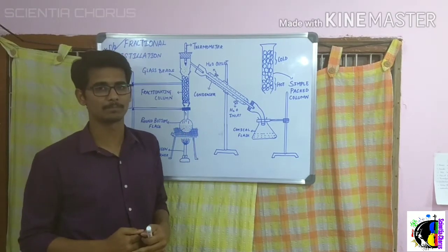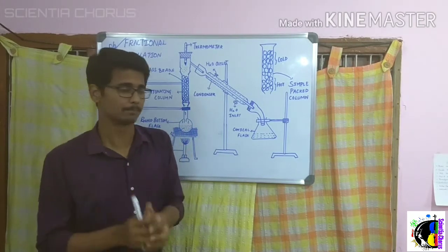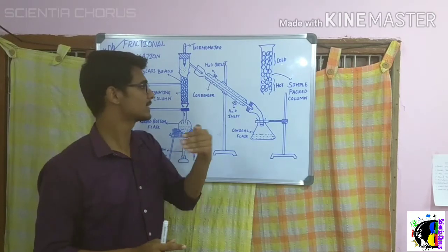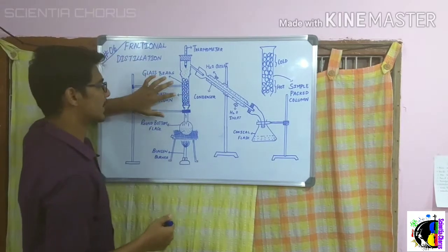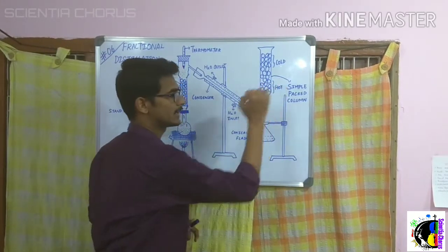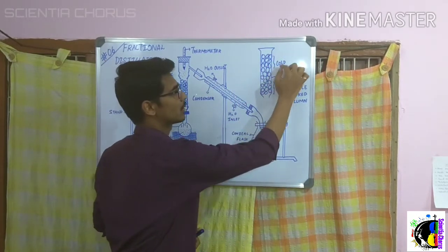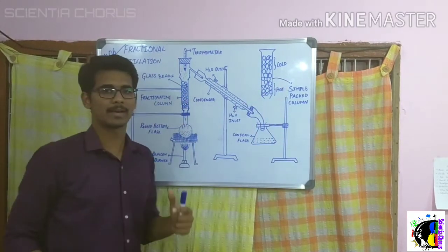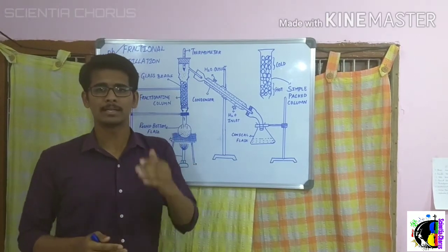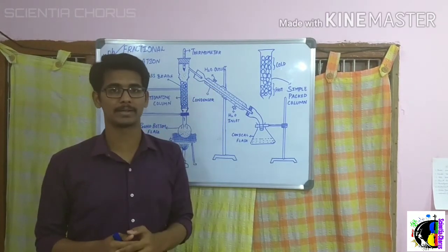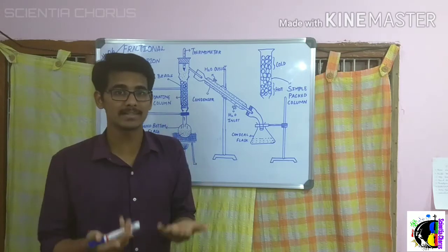The ethanol vapor enters the fractionating column. In this fractionating column, the bottom part is hotter than the upper part — the upper portion is cold and the lower portion is hot. It is important to understand that vapor with a high boiling point condenses much faster than vapor with a low boiling point.